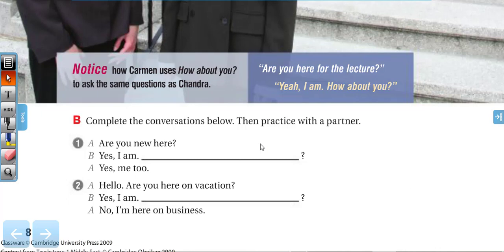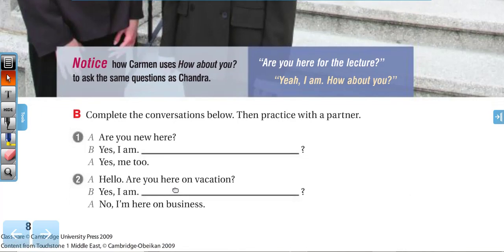'Are you new here?' 'Yes, I am. How about you?' 'Yes, me too.' Number two: 'Hello. Are you here on vacation?' 'Yes, I am. How about you?' 'No, I'm here on business.'